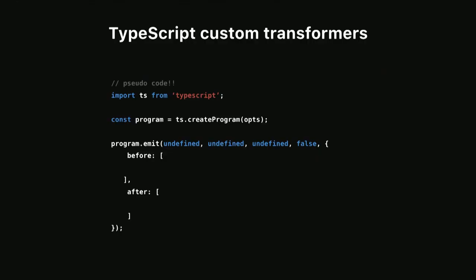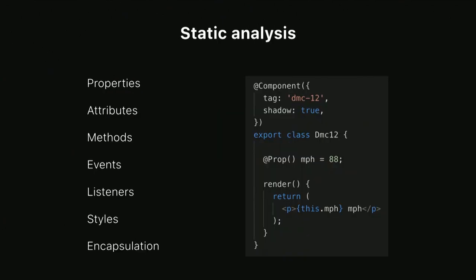The source of our components uses TypeScript, and under the hood TypeScript has many great features, one of them being custom transformers. In the before custom transform, we're able to gather useful metadata about each component. And in the after transform, we can take that metadata and apply many optimizations to both the runtime and the user's components. We can also use this feature to generate numerous output targets of the same source code. And beyond just generating code, the compiler is able to heavily apply many optimizations after the static analysis.